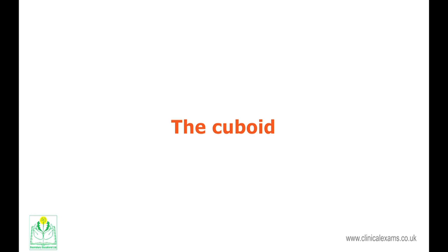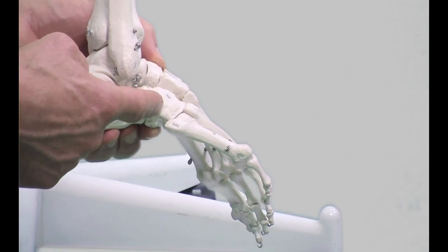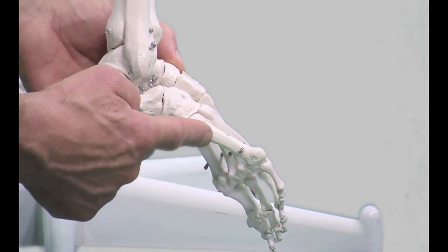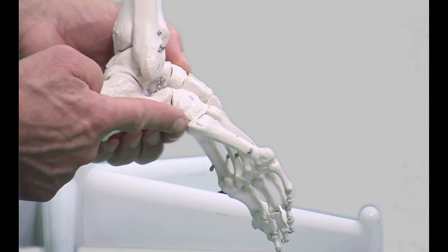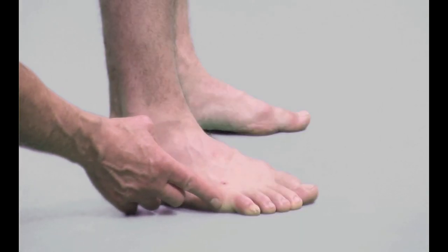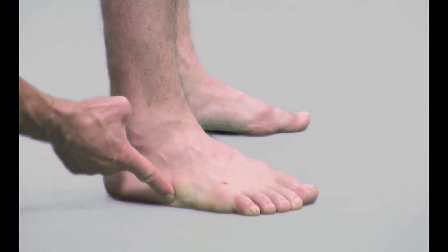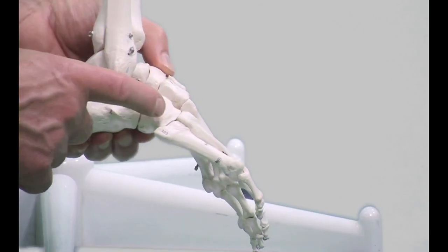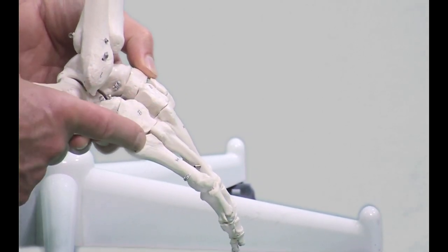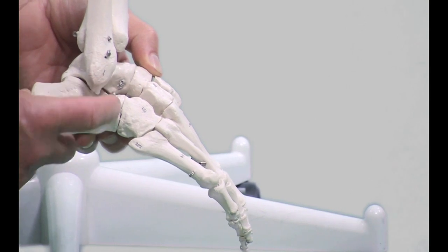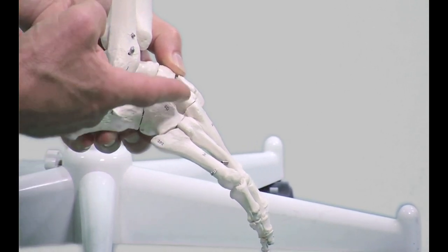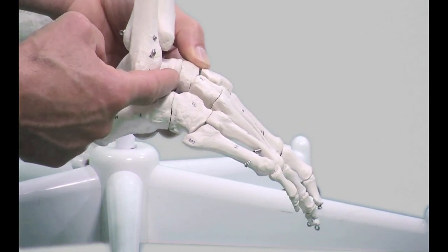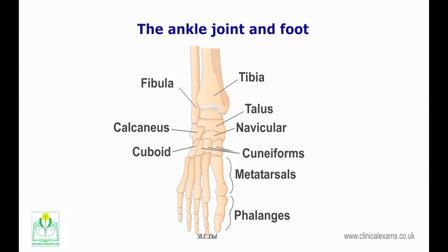The cuboid is located laterally within the tarsals of the foot. Its position can be identified by following the extended proximal projection of the fifth metatarsal; at the end of this bony projection is a soft indentation marking the location of the cuboid. Anteriorly, the cuboid articulates with the fourth and fifth metatarsals. On the medial surface, it articulates with both the lateral cuneiform and the navicular bones.